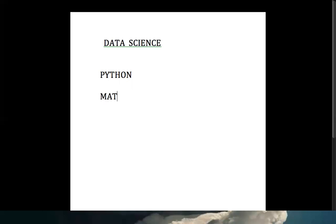The next important prerequisite is mathematics — especially statistics. Statistics is very, very important. We need to learn statistics faster. The level of statistics you need to implement depends on the level of your machine learning or deep learning model. In feature engineering, you will apply different statistics to clean the data, extract the data, apply mathematical formulas, and give clean data to the model.